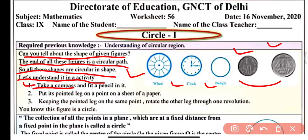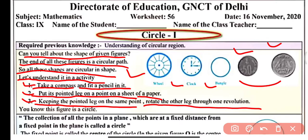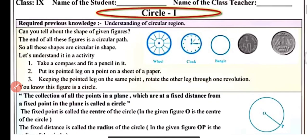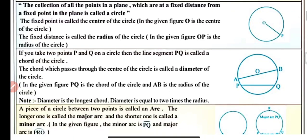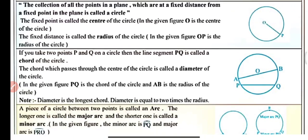Take a compass and fit a pencil in it. Put its pointed leg on a point on a sheet of paper. Keeping the pointed leg on the same point, rotate the other leg through one complete revolution. After one revolution we will get a circle. So the collection of all the points in a plane which are at a fixed distance from a fixed point in the plane is called a circle.